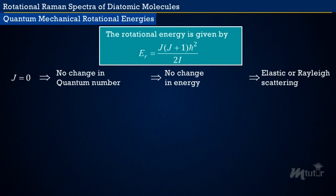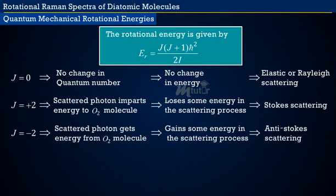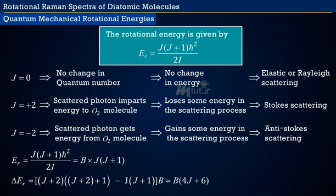When J equals 0, there is no change in rotational quantum number and therefore no change in energy — this is elastic or Rayleigh scattering. When J equals plus 2, the scattered photon imparts energy to the O2 molecule and loses some energy — this is Stokes scattering. When J equals minus 2, the scattered photon gains energy from the O2 molecule — this is anti-Stokes scattering. From the difference in rotational energy levels, the vibrational frequency can be calculated, from which the moment of inertia and bond length can be determined.